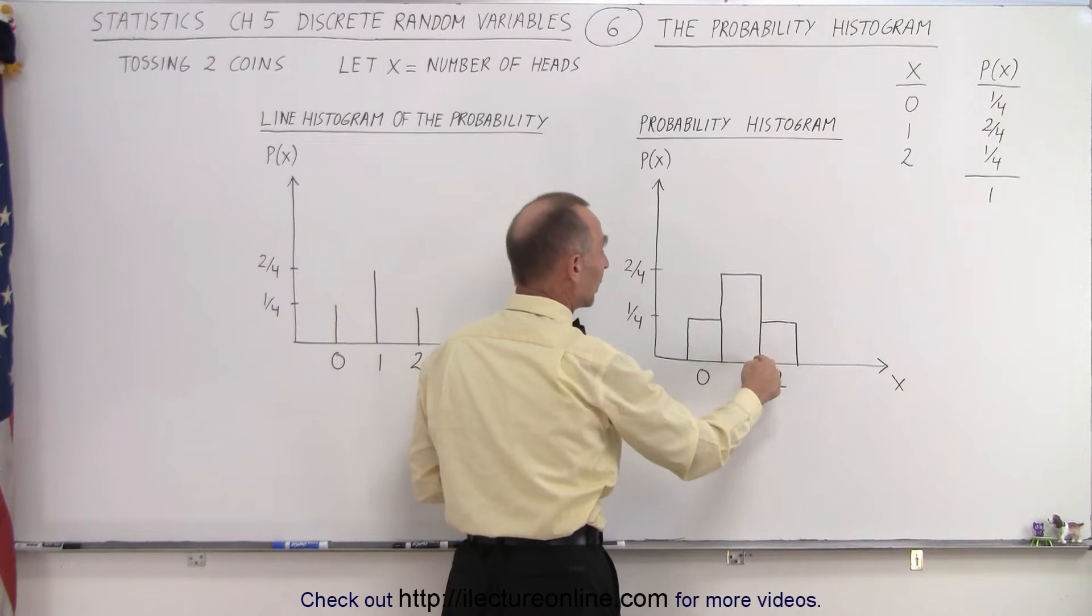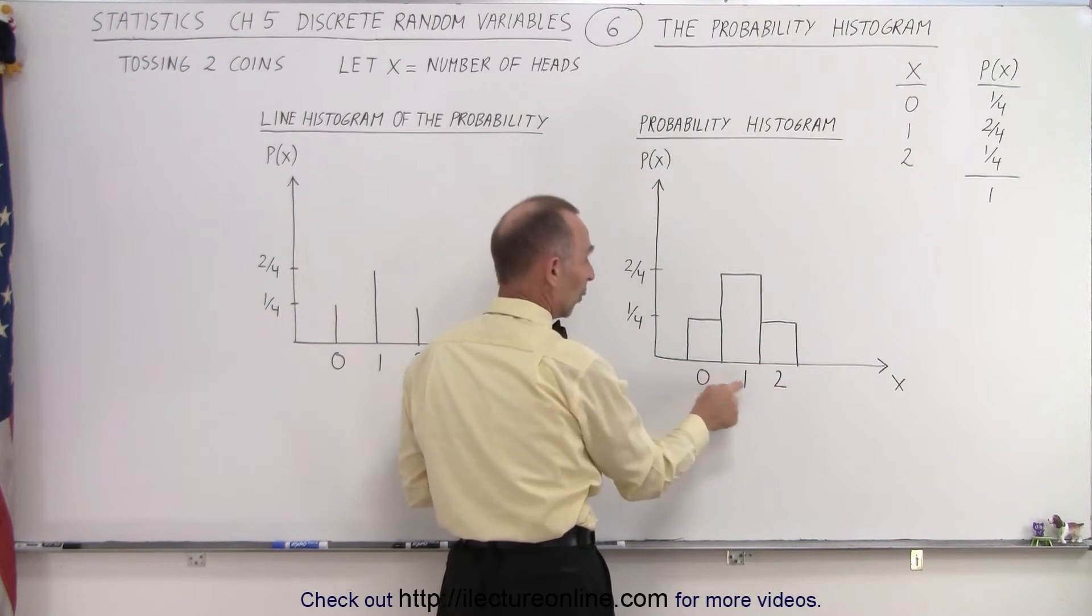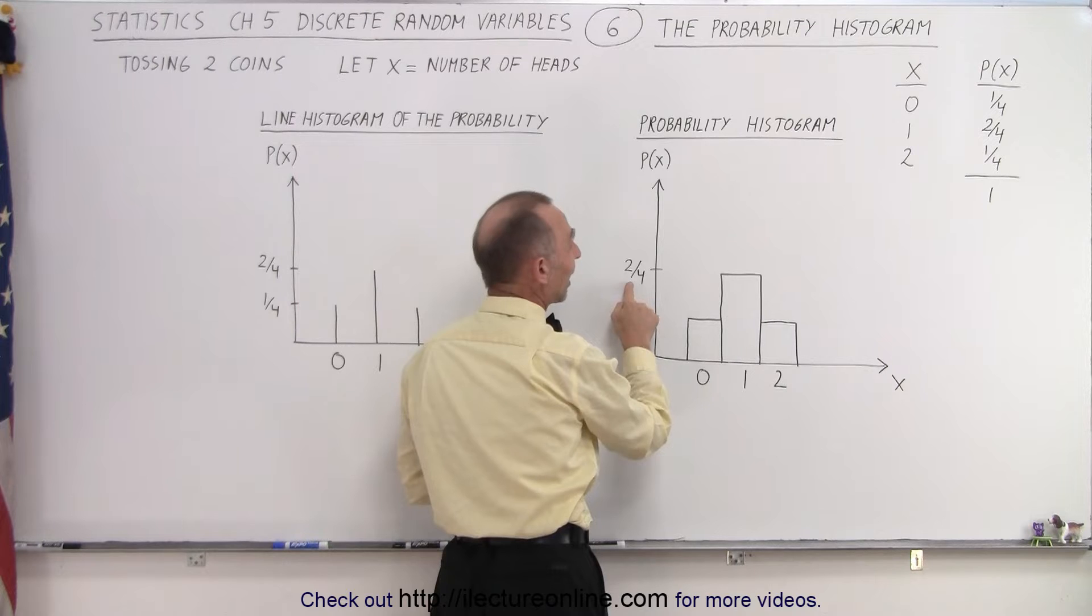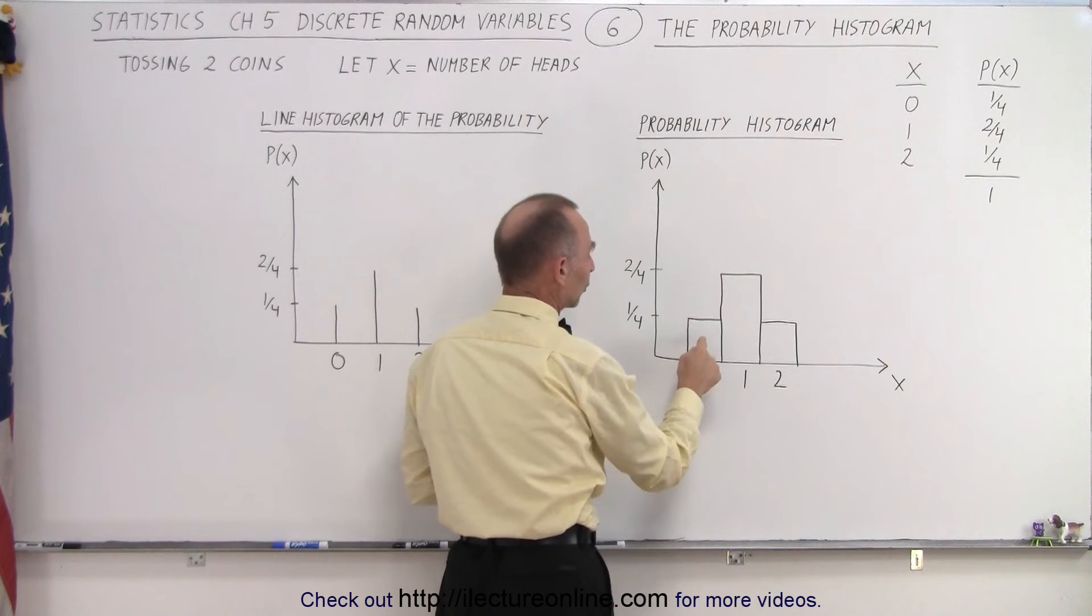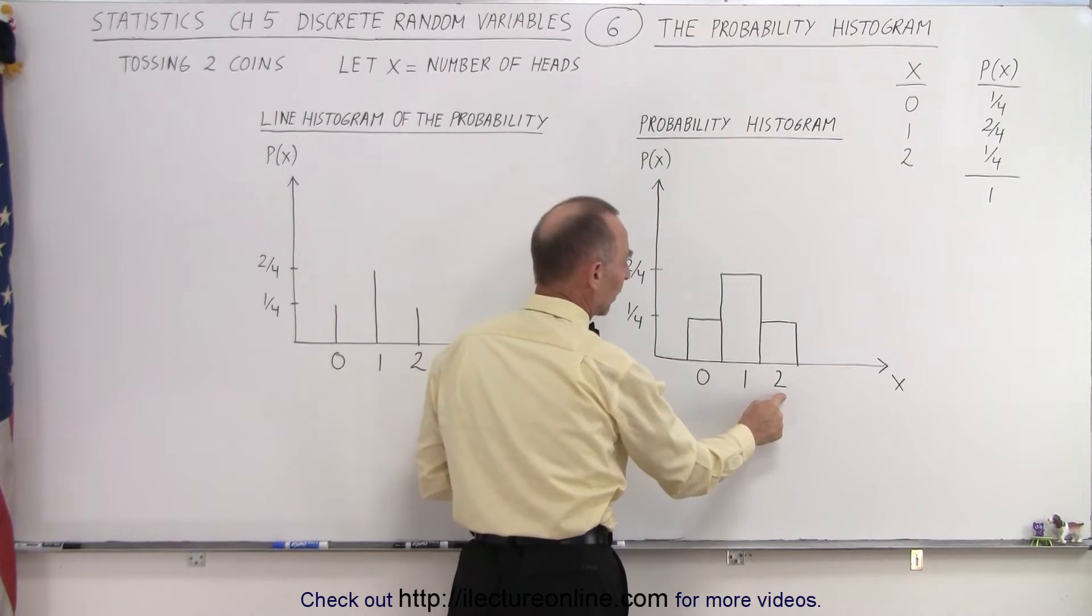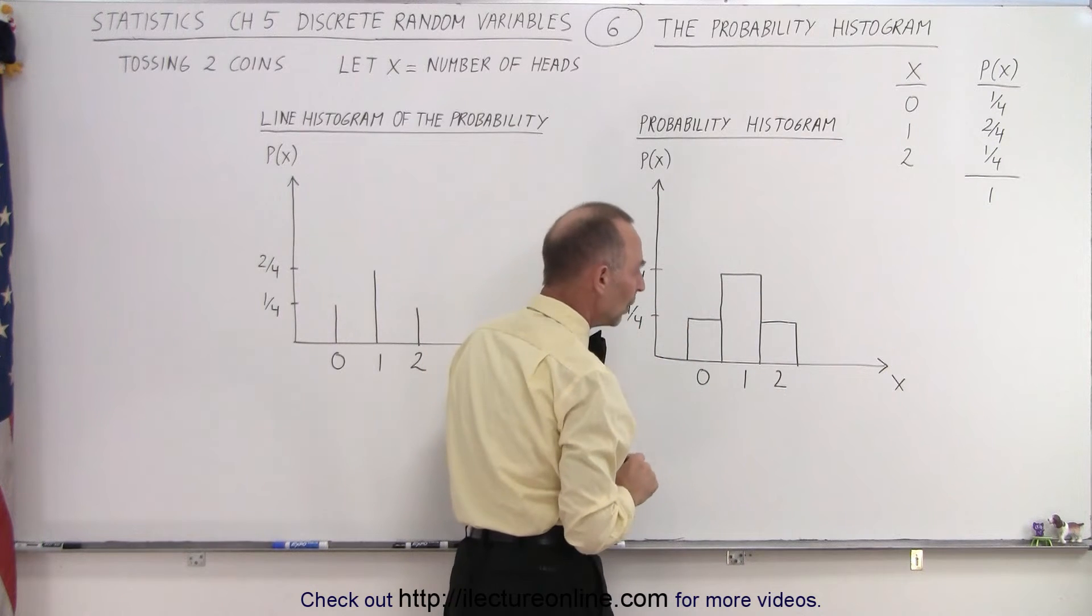You can see that the greatest probability is that we have 1 head, that is one half probability. We have one quarter probability that we'll have 0 heads, and one quarter probability that we'll have 2 heads.